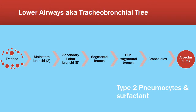The lower airways consist of the trachea, the two main stem bronchi, the lobar bronchi, the segmental bronchi, the sub-segmental bronchi, then the bronchioles, the alveolar ducts, and the alveoli themselves.